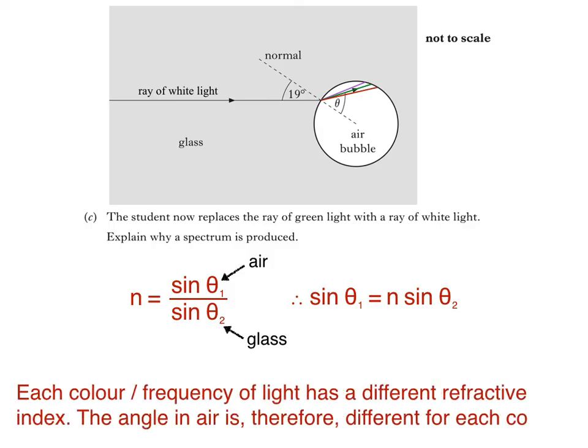Each colour, or frequency of light, has a different refractive index. The angle in air is, therefore, different for each colour.